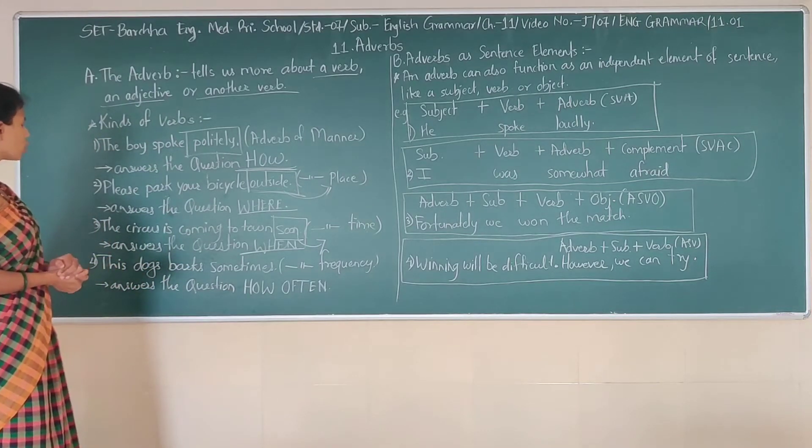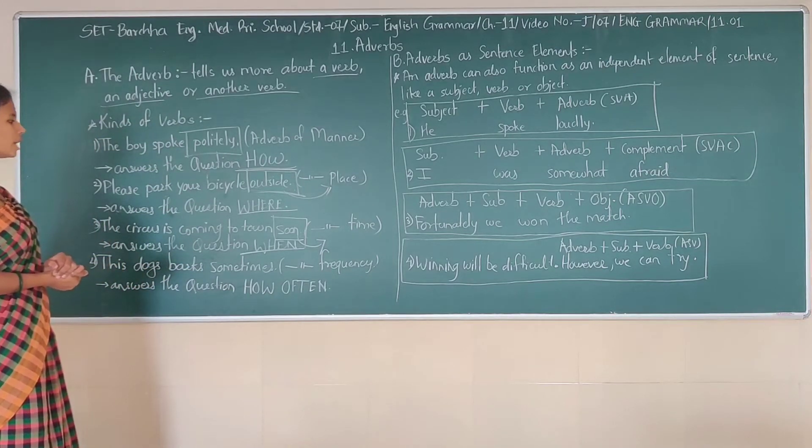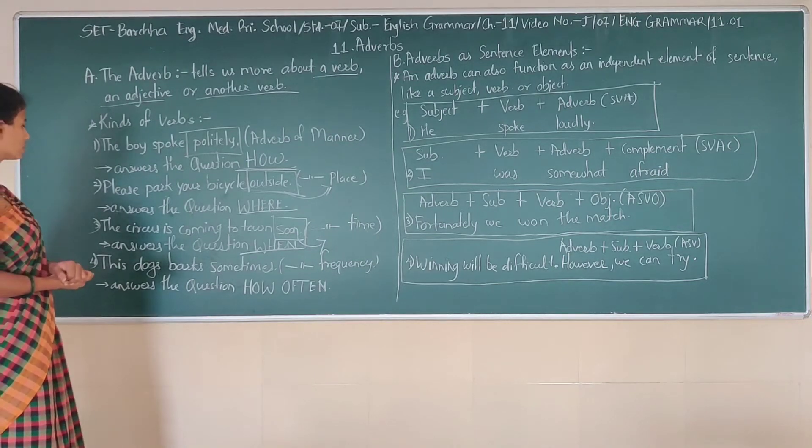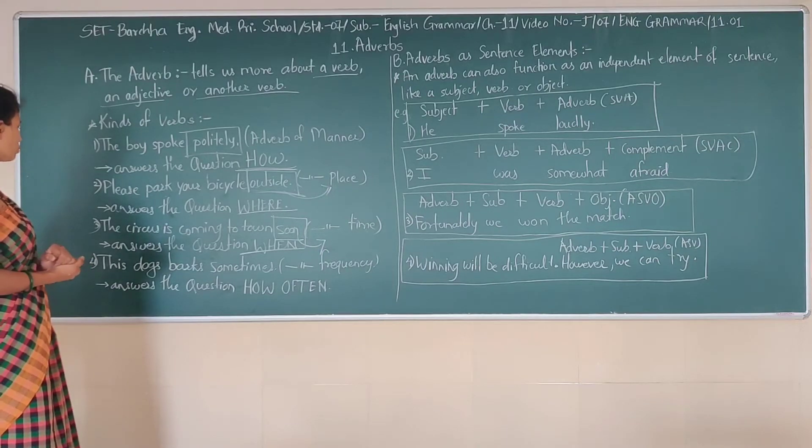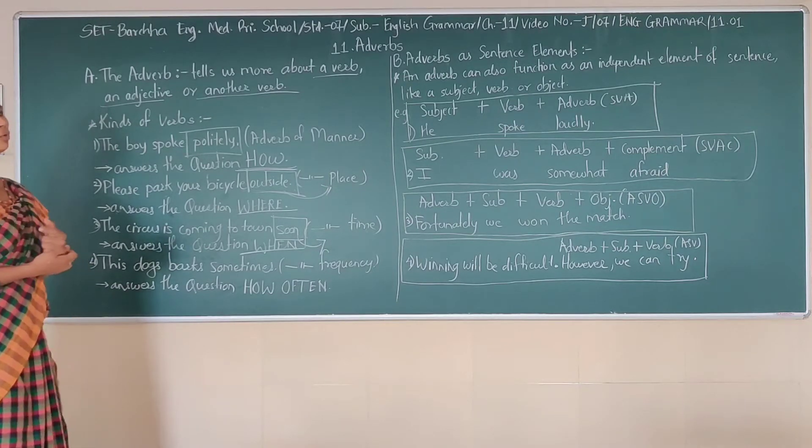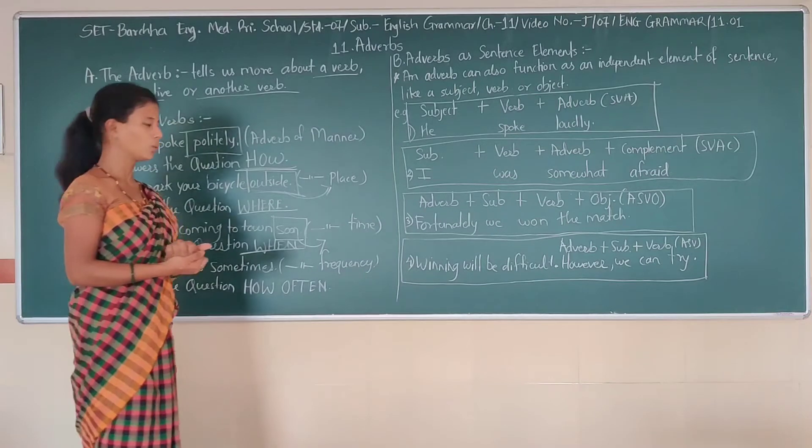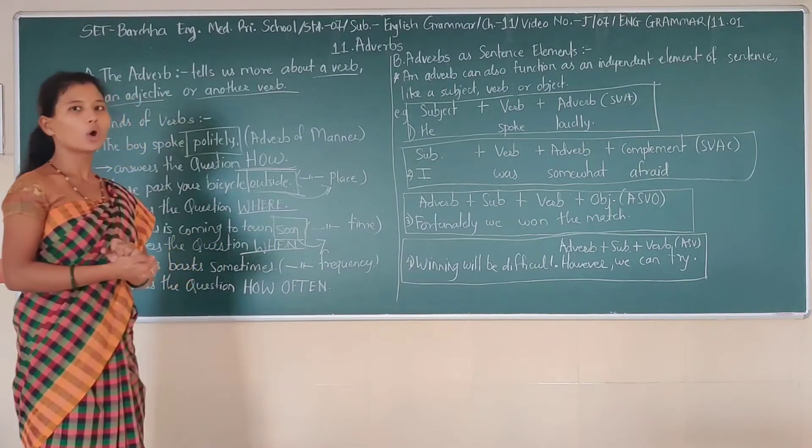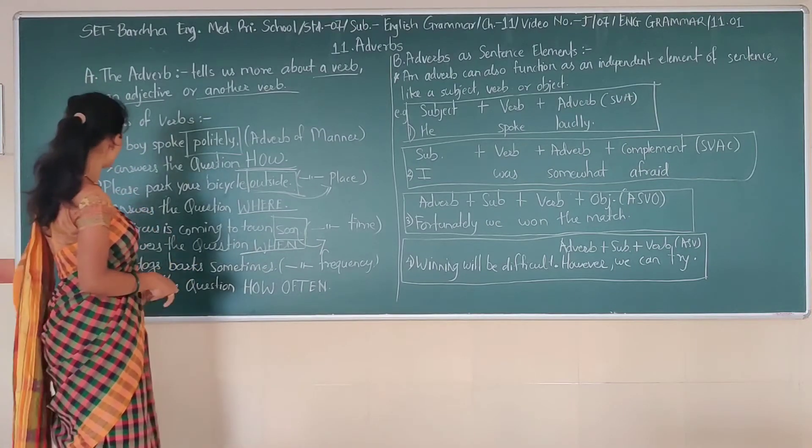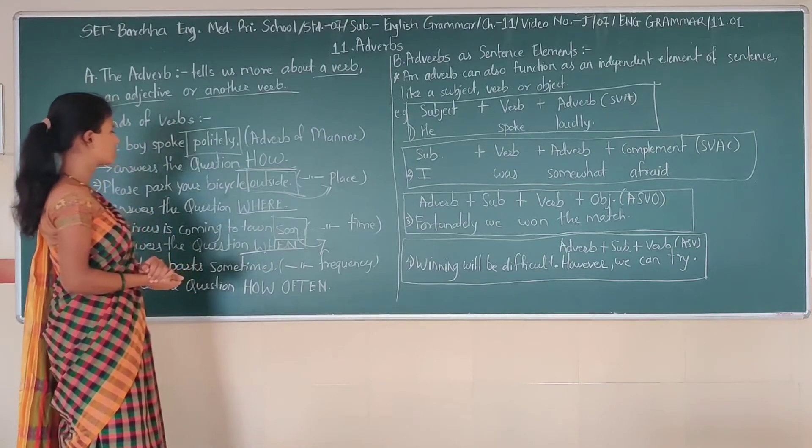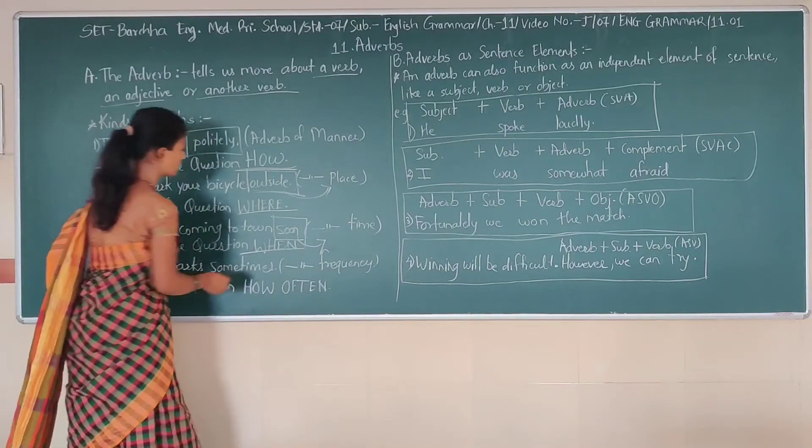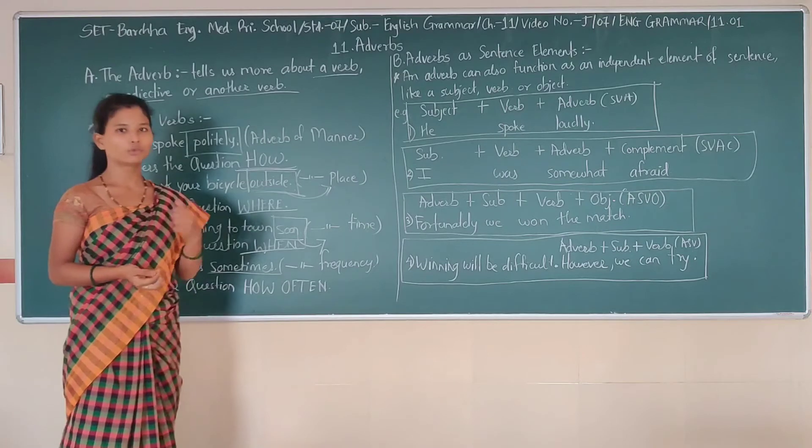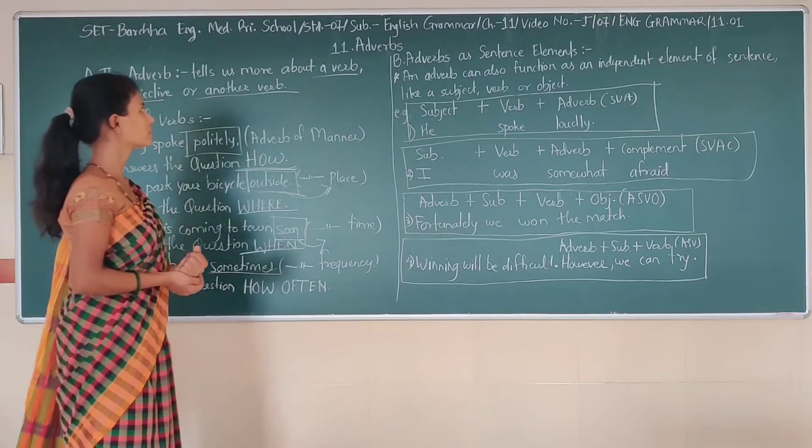Now last one. This dog barks sometimes. So it is adverb of frequency. Now, if you want to find out the adverb of frequency, then your question should be starting, how often does this dog bark. So your answer will be sometimes. And sometimes is your adverb of frequency. Correct?